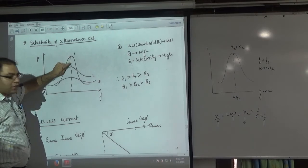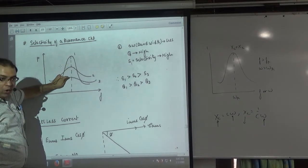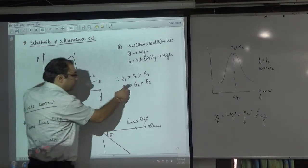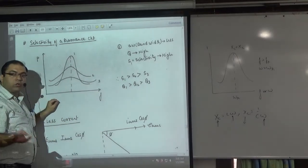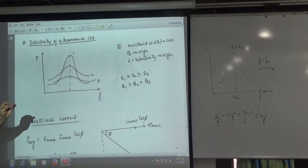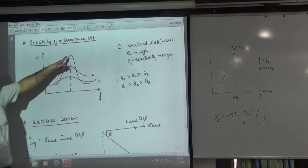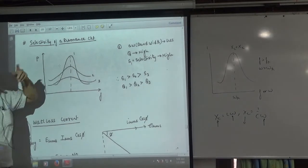So its quality is high, its quality is low, its quality is low. So Q1 greater than Q2 greater than Q3. So which signal will select for accepting? Signal number 1 which is quality high.